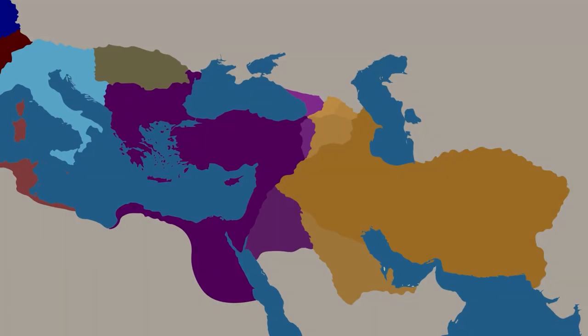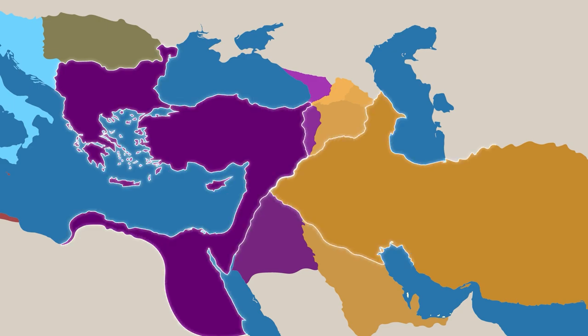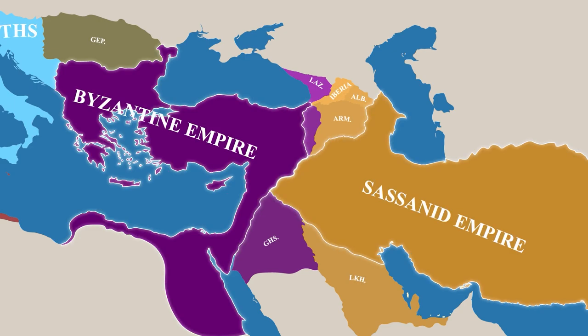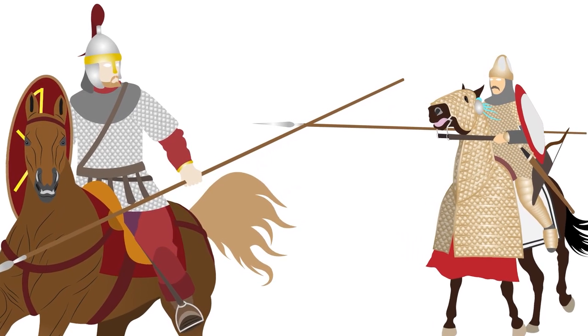In the 6th century CE, two superpowers dominated the Near East, the Eastern Roman or Byzantine Empire, and the Sassanid Persians. Sometimes, these two powers would come to blows, sending armies against each other and engaging in massive battles.